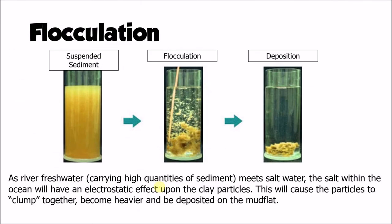To say a little more about flocculation, you can see it happening in this experiment shown in three photographs on the screen. Initially we have lots of suspended sediment. These tiny particles of clay are so small that no matter how still the water is, they aren't deposited — they aren't heavy enough to sink. On their own they will always be carried in suspension, which gives the water a cloudy appearance because of those very fine particles floating around.